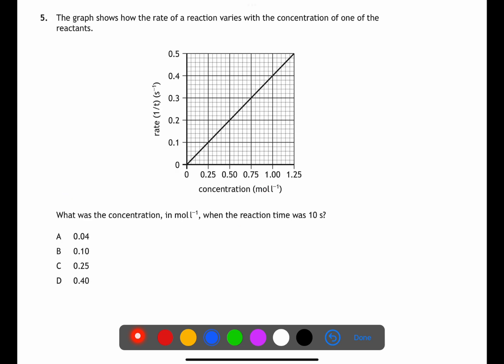Question five we're looking at rate reactions. Here we're trying to find the concentration when the reaction time was 10 seconds. The graph is shown with rate 1 divided by time so we need to do the calculation 1 divided by 10 to find the rate which is 0.1. We can then use this value with the graph to find the concentration is 0.25 C.